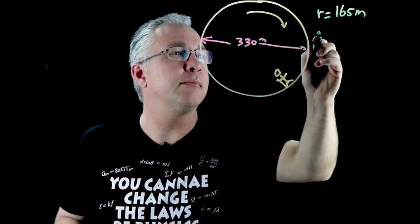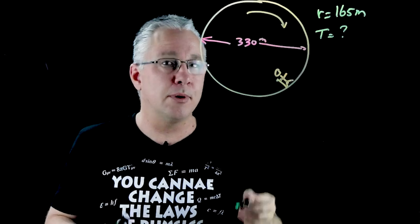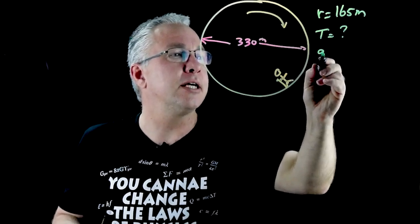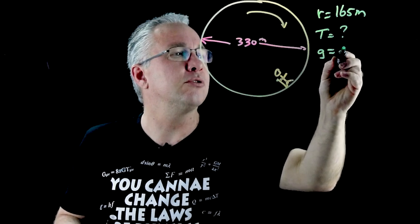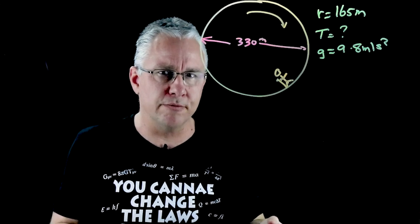Now we're asked to find the period so that's what we're interested in which is T and we don't know that, but we do know the acceleration that we want Dr David Bowman to experience and so the acceleration which is our g value is equal to 9.8 meters per second squared. How do we solve this now?